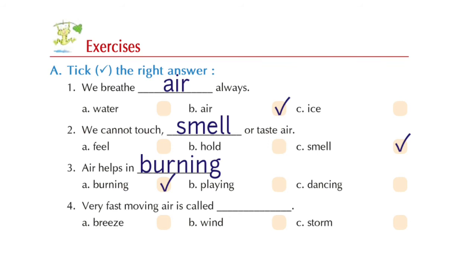Now number four, very fast moving air is called dash. Option A, breeze. Option B, wind. Option C, storm. Which is the correct option? Yes, Option C, storm. Very fast moving air is called storm.